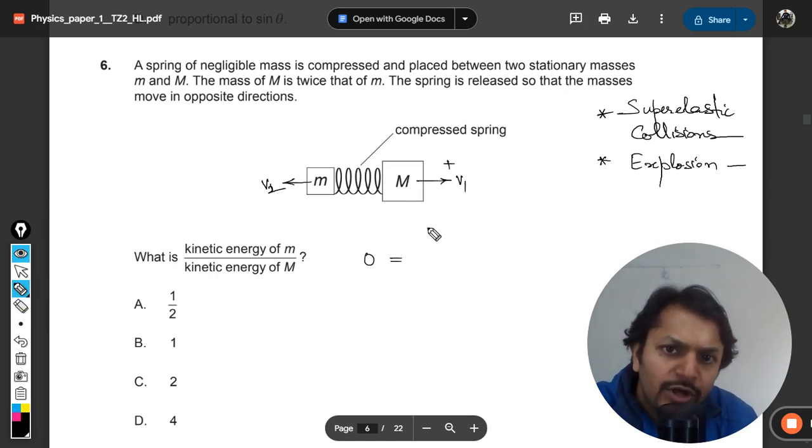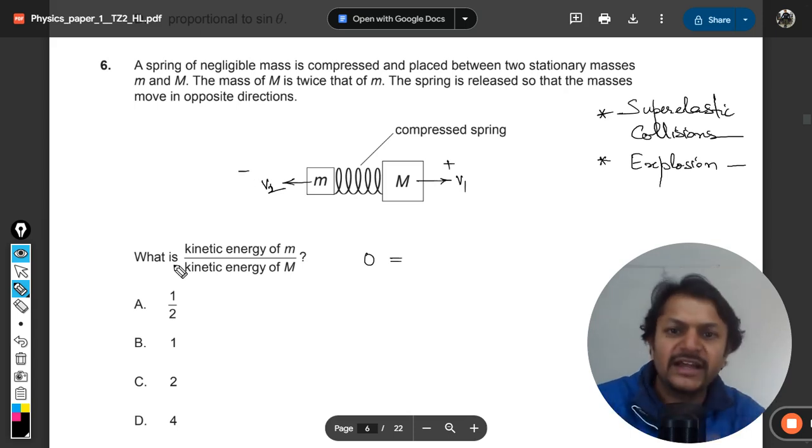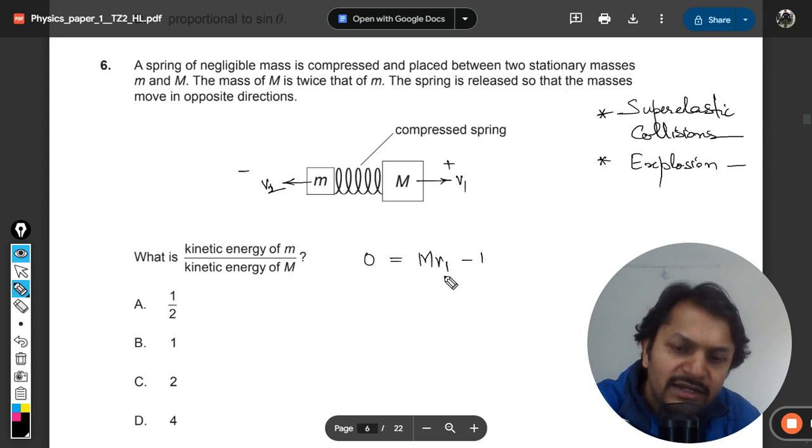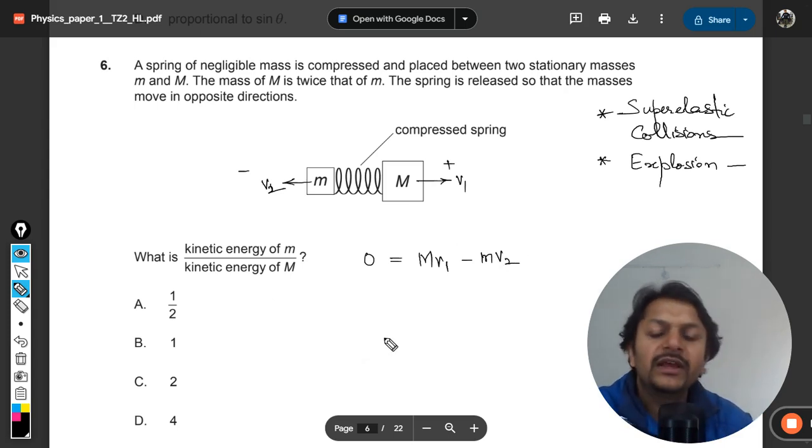I'm going to take this direction as positive and this direction as negative, so the momentum will be Mv1 minus small m v2. Accordingly we can find the ratio of the kinetic energy.